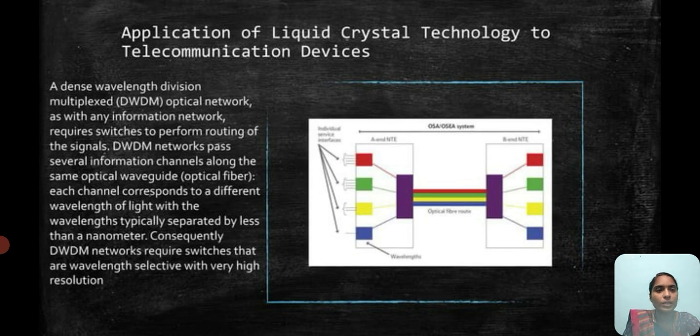Application of liquid crystal technology to telecommunication devices: A dense wavelength division multiplexed, i.e. DWDM optical network, as with any information network, requires switches to perform routing of signals. DWDM networks have several information channels along the same optical waveguide. Each channel corresponds to a different wavelength of light, with wavelengths typically separated by less than a nanometer. Consequently, DWDM networks require switches that are wavelength selective with very high resolution.